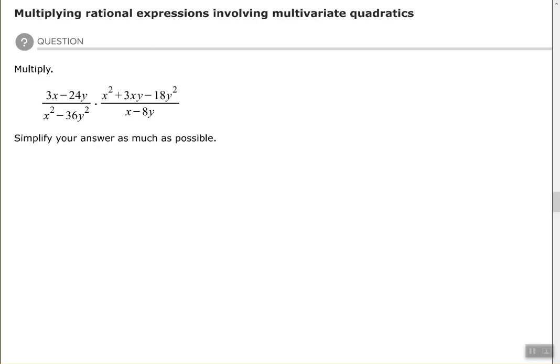The process is the same: you want to factor and cancel. So if we look at the first numerator here, we can factor out a 3 and that would leave us with x minus 8y in parentheses.